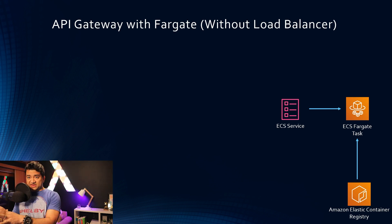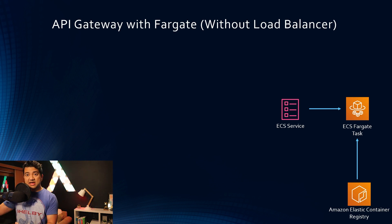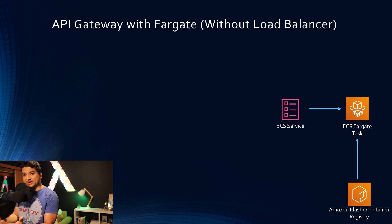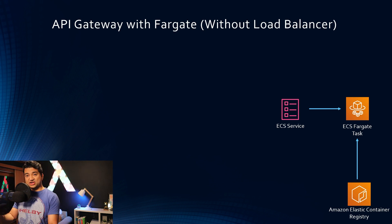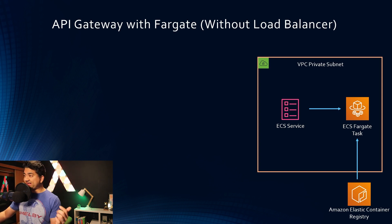You also have an ECS service on top of the Fargate task. This ECS service is not exactly the same as a Kubernetes service. The ECS service makes sure that if you say you want to run two copies of this task and one copy goes down, it will bring up another task to maintain the desired number. You can integrate a load balancer with a service. In Kubernetes, the replica behavior is handled by a replica set, and a Kubernetes service can create a load balancer — but an ECS service does not create a load balancer. All this runs within a VPC private subnet, which is what is recommended for real-world applications. Ideally, you should not be able to access the ECS Fargate task directly using the IP address from the outside world.